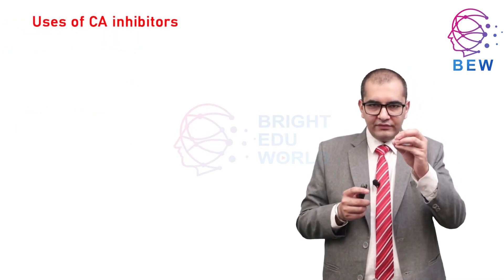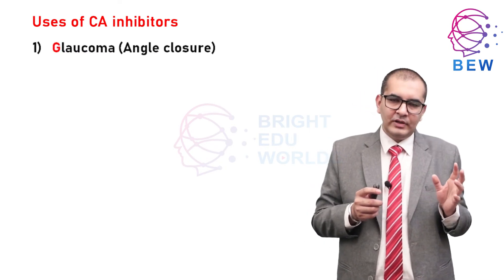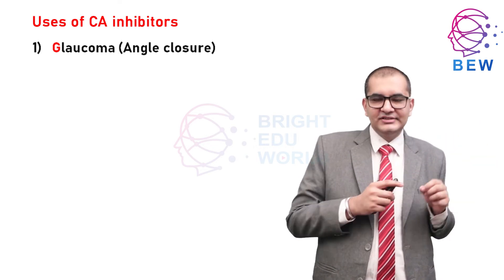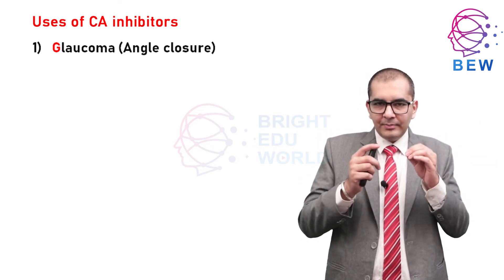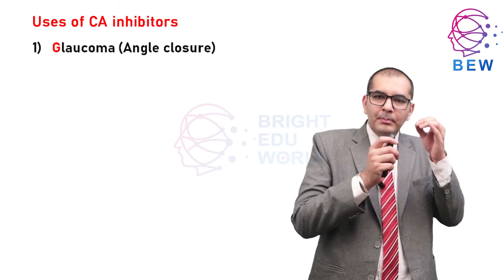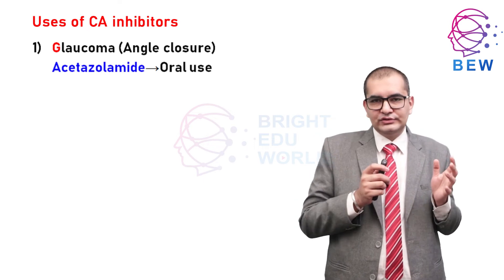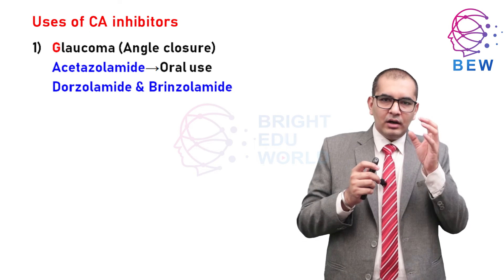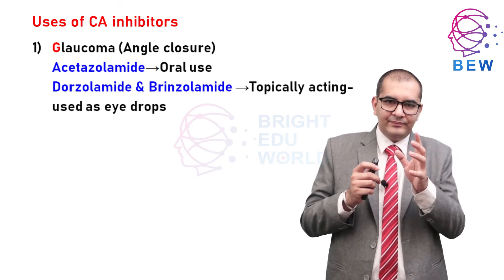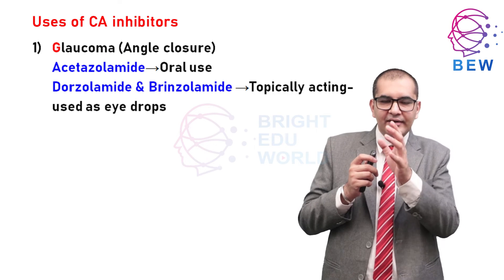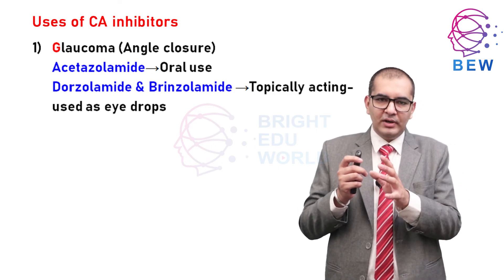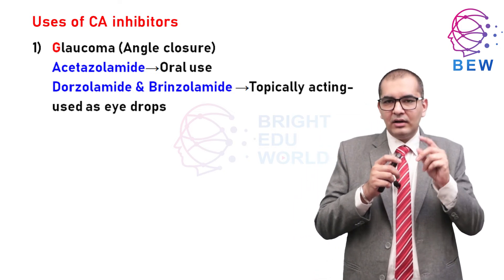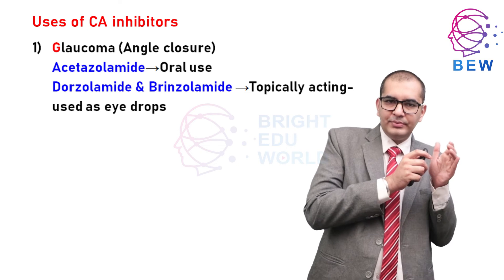Current clinical uses of acetazolamide include: most importantly, glaucoma — it is used as an adjuvant to other ocular hypotensives. Remember, acetazolamide is used orally in glaucoma. Dorzolamide and brinzolamide are used topically — these are topically acting carbonic anhydrase inhibitors used in glaucoma as eye drops.